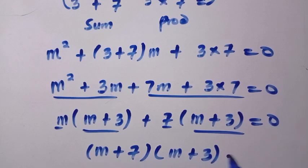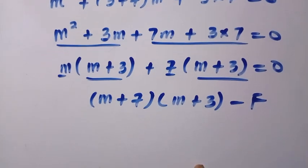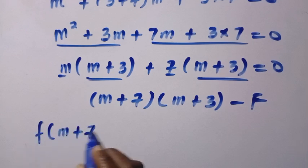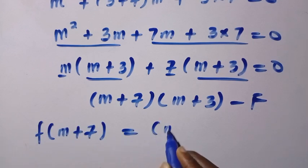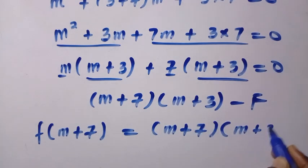We have 2 factors. It means we are going to get 2 solutions. We would have m equals minus 7 and m equals plus 3. But that is not the case here. We have to recall back our f of m plus 4. So then it is now equals m plus 7, multiply by m plus 3.